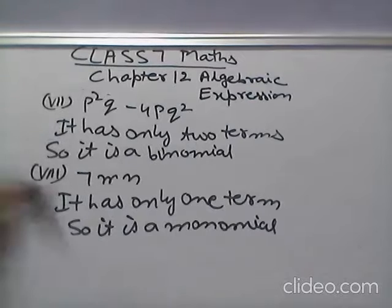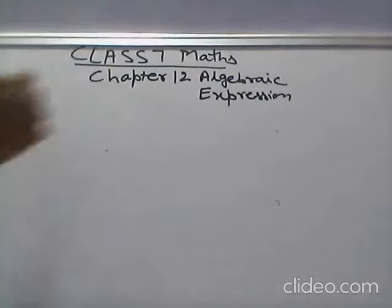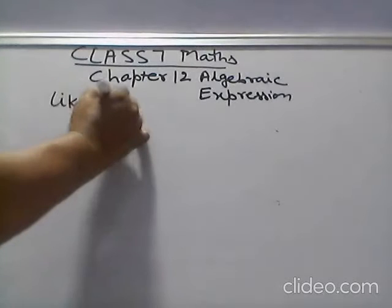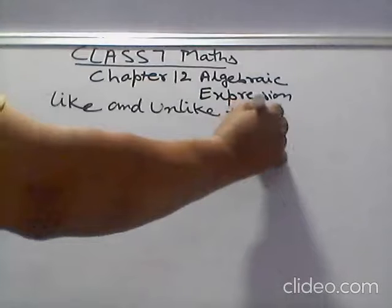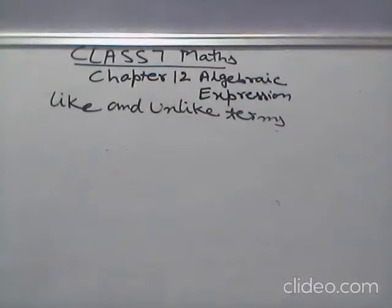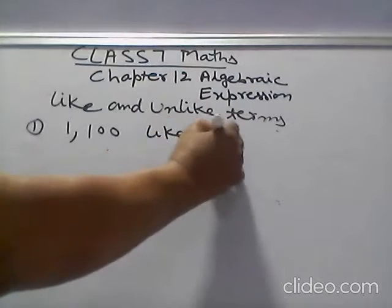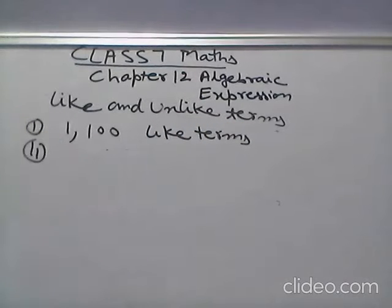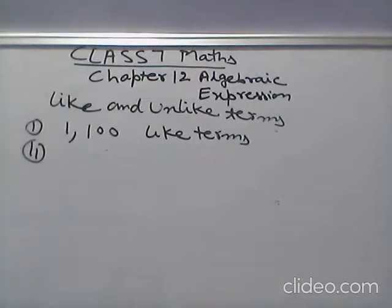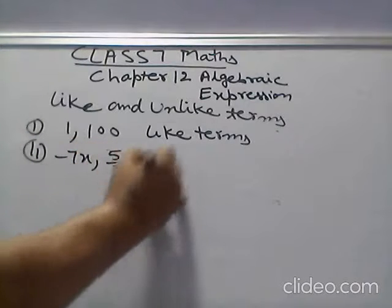Now next, Like and unlike terms. First, One, Hundred, Like terms. Second, Minus 7x, 5 over 2 x, Like terms.